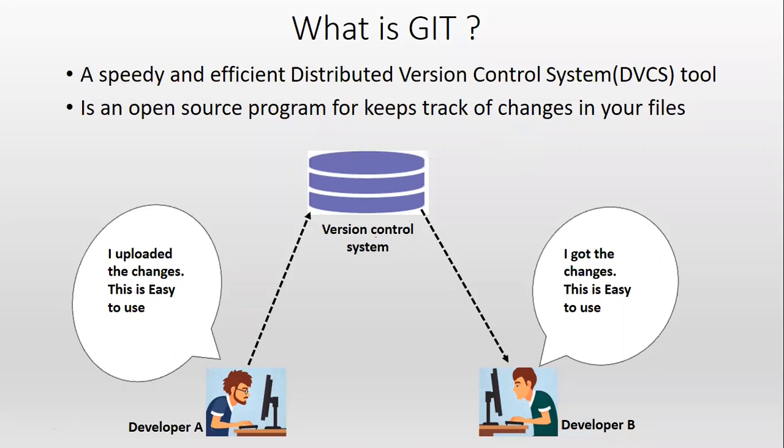Hi everyone. In the previous session I explained what a version control system is. In this session I will explain what Git is. Git is a distributed version control system tool that keeps track of all the changes in your files.